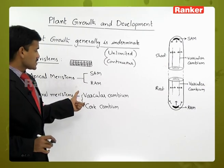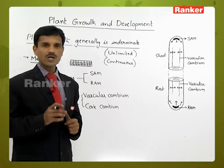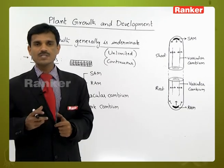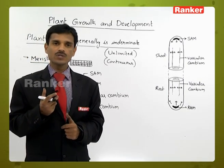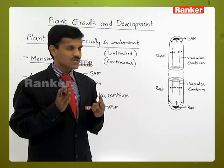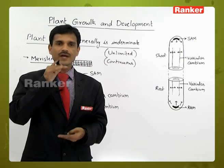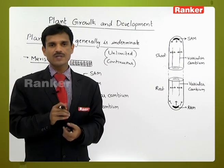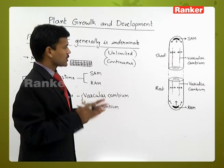Both lateral meristems and apical meristems are involved in growth, but the type of growth differs. There is linear growth and transverse growth. Linear growth is lengthwise or heightwise growth, while transverse growth is widthwise growth.